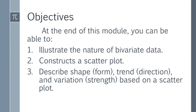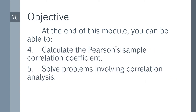The objectives of this module, or at the end of this video, you will be able to: first, illustrate the nature of bivariate data; second, construct a scatterplot; third, describe shape, trend, and variation based on a scatterplot. You are also expected to calculate the Pearson sample correlation coefficient, or the Pearson R, and solve problems involving correlation coefficient or correlation analysis.